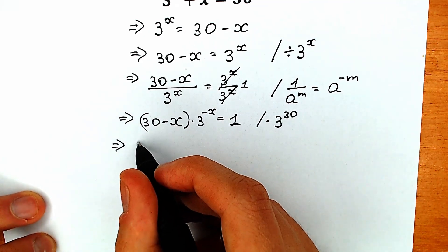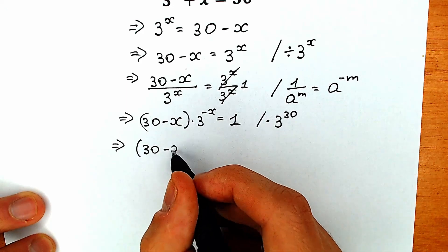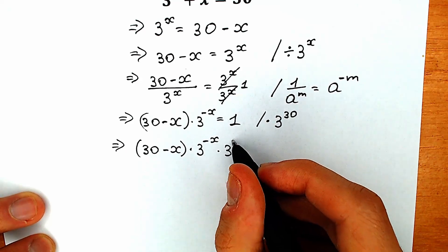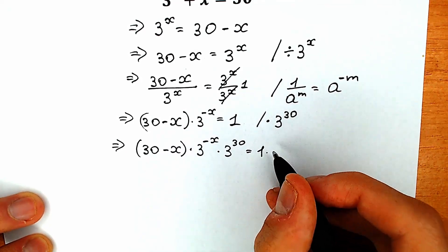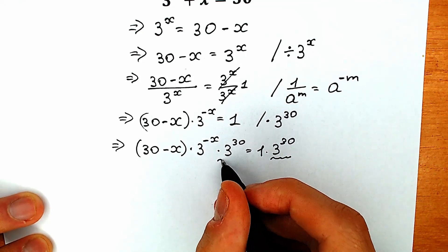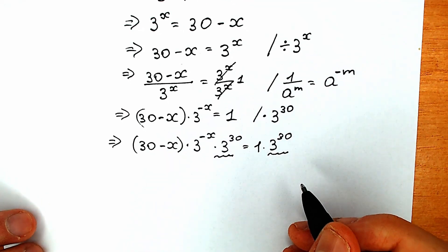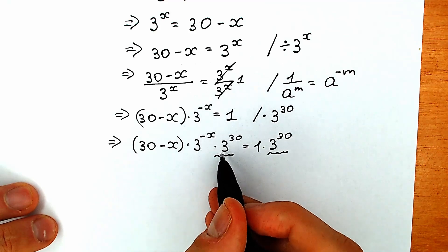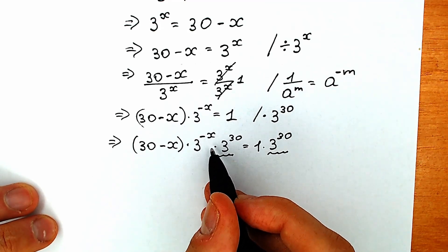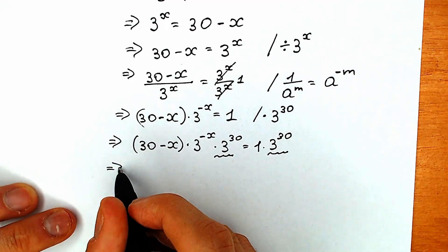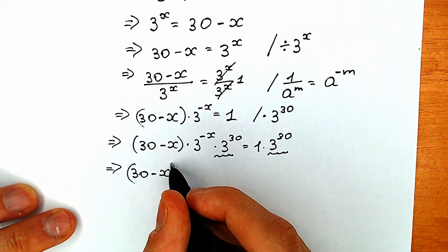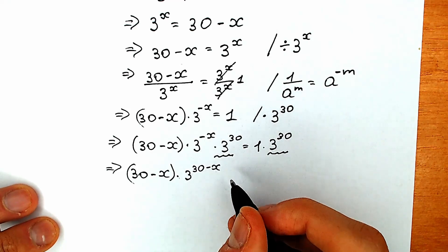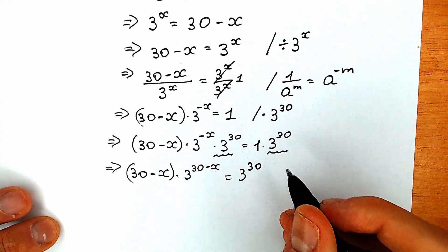As a result we have 30 minus x times 3 to the power minus x, multiplied by 3 to the power 30 on the left side, equal to 1 times 3 to the power 30 on the right side. Since we have the same base with a multiplication sign, we can add the powers: minus x plus 30 gives us 3 to the power 30 minus x. So we have 30 minus x times 3 to the power (30 minus x) equal to 3 to the power 30.